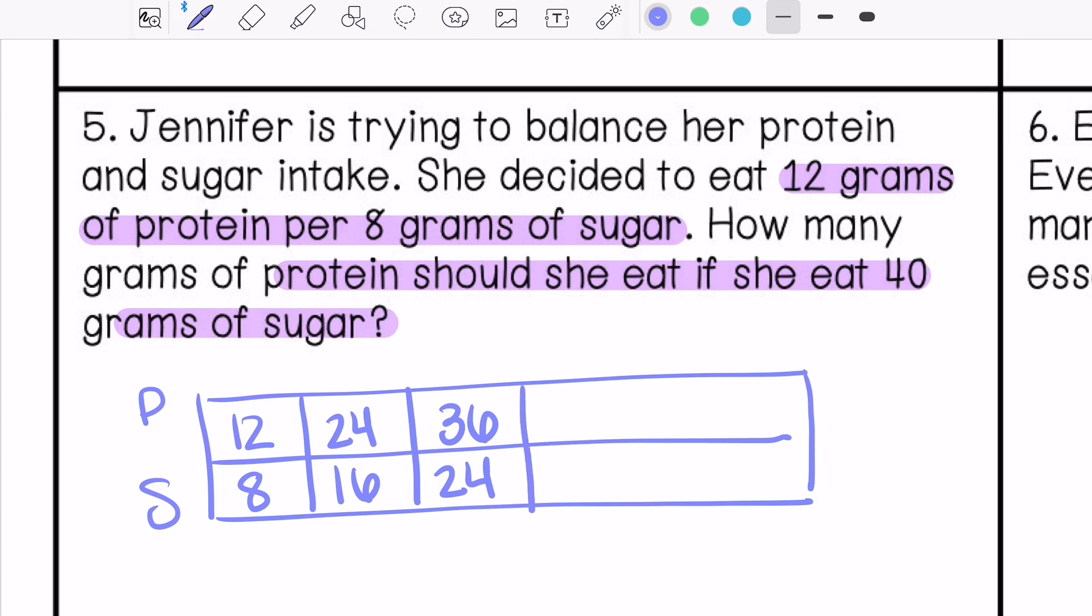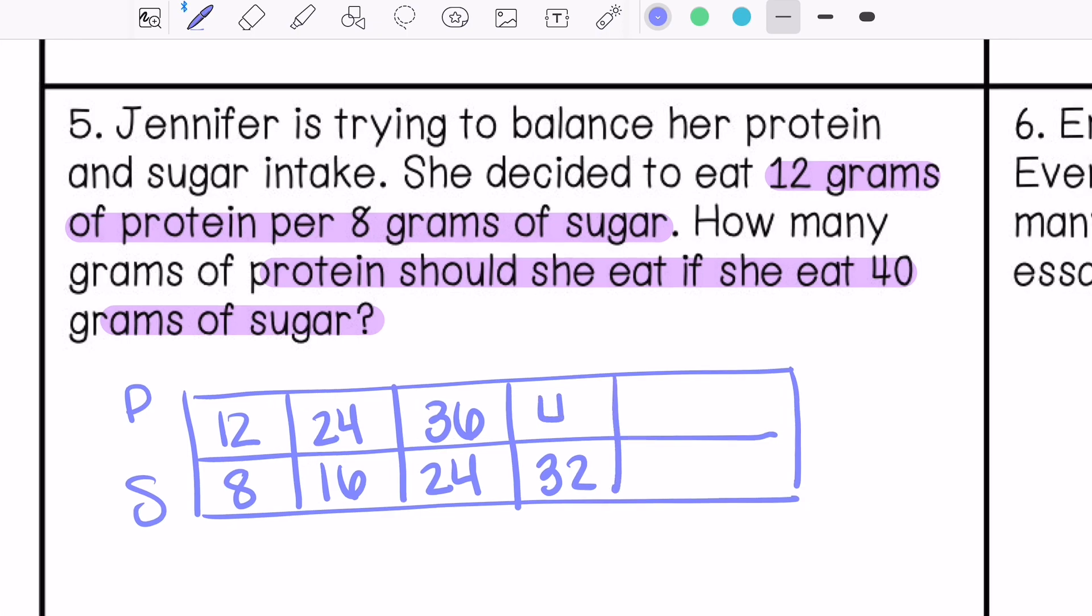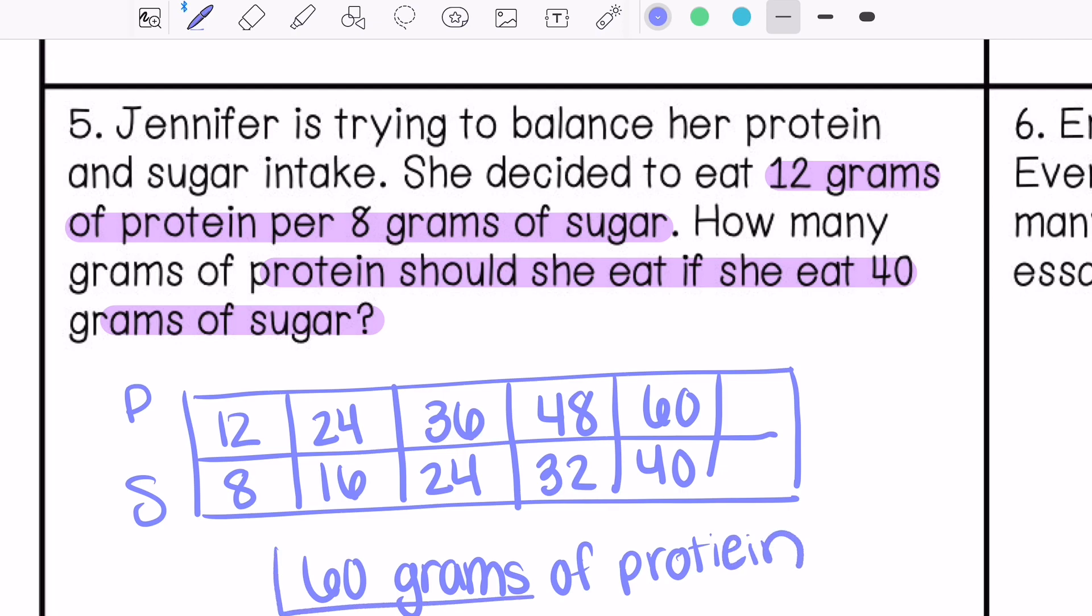8 times four is 32. I'm sorry, 12 times four is 48. And then 8 times five is 40. 12 times five is 60. So it should be 60 grams of protein.